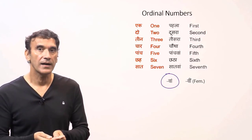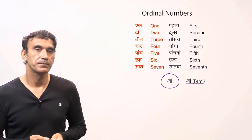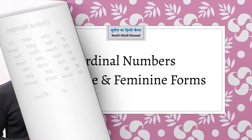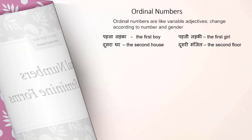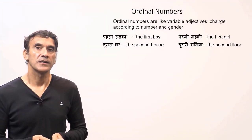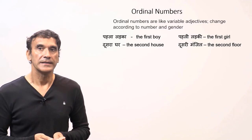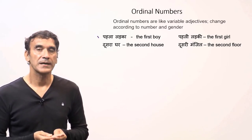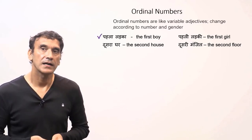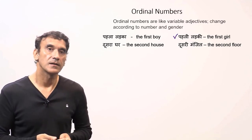After seven, all the ordinal numbers get the suffix '-wa', and the feminine form would be '-wi'. As mentioned, all the ordinal numbers are variable adjectives, meaning they will have a feminine form too. For example, pehla ladka — the first boy; pehli ladki — the first girl.